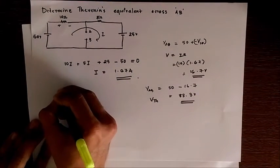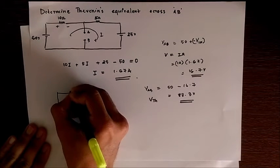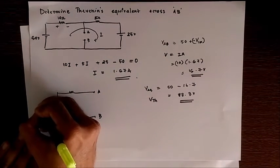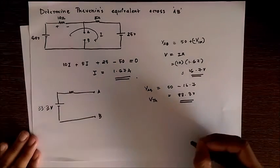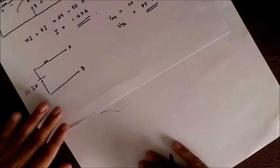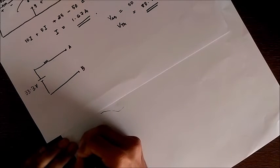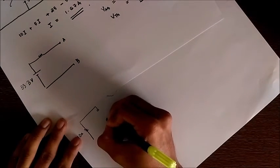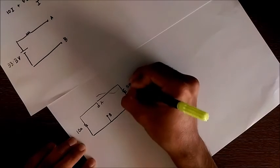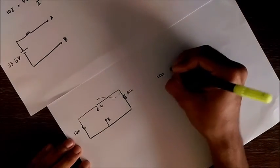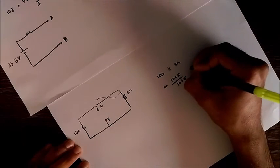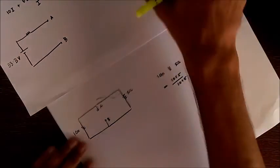So we have A and B. We got V-Thevenin as 33.3 volts. Now we have to find R-Thevenin which can be obtained by deactivating all voltage and current sources. So it is 10 ohm in parallel with 5 ohm, which we get the value as 10 times 5 by 10 plus 5, which is 3.33 ohms. So the Thevenin equivalent resistance becomes 3.33 ohms.